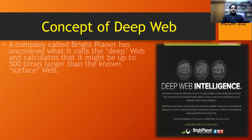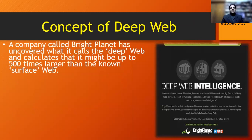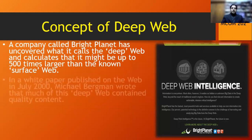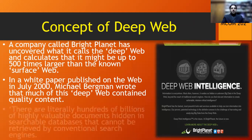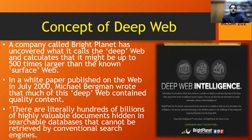The internet information we access is only the tip of the iceberg — the rest of the information is hidden in the deep web. A company called BrightPlanet uncovered this and calculated that the deep web might be up to 500 times larger than the surface web. In a white paper published in July 2000, the author wrote that much of this deep web contains quality content — literally hundreds of billions of highly valuable documents hidden in searchable databases that cannot be retrieved by conventional search engines.